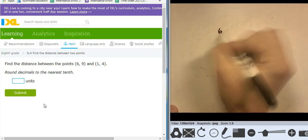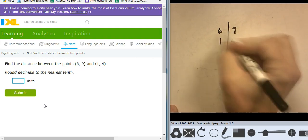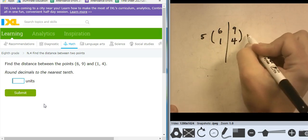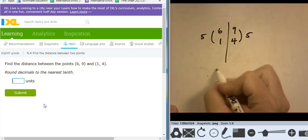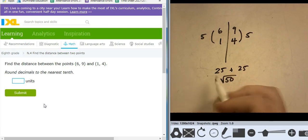Here's another one. 6 and 9, 1 and 4. 6 to 1 is a change of 5. 9 to 4 is a change of 5. So I'm looking at 25 plus 25. So the square root of 50, which is 7.1 with the rounding. Nearest tenth.